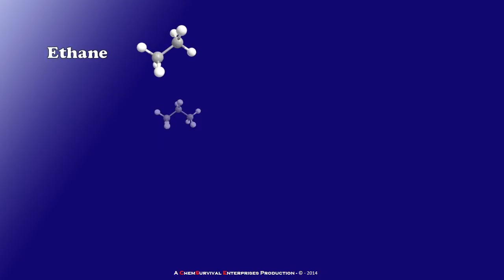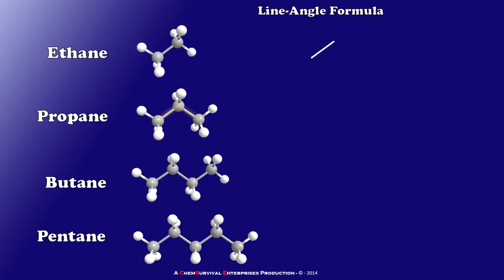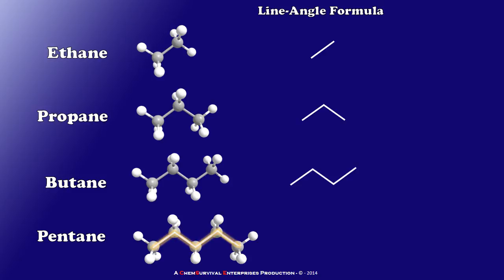Let's look at the first few normal alkanes. Methane is omitted because it would be drawn as simply a dot. Ethane has two carbons connected by a single bond, so its line angle formula is simply a line — the two termini represent the carbon atoms, and the reader mentally fills in the three hydrogens on each. Propane's interior carbon is depicted as an angle, with the two terminal carbons at the ends. We can continue through butane, pentane, and onward, creating ever-larger line angle formulas showing only the carbon locations.